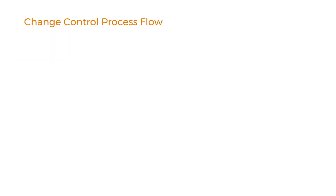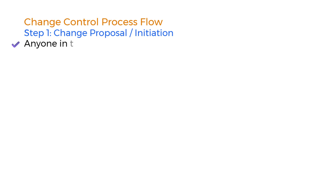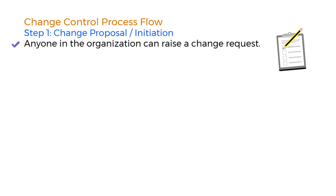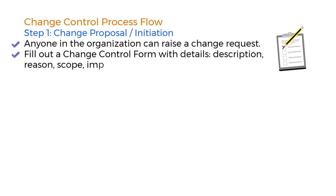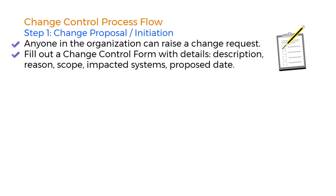Let's go through the typical steps in change control. Step 1: Change Proposal or Initiation. Every change starts with an idea, and in a GMP environment, even small changes must be formalized. Any employee — whether from QA, production, engineering, or IT — can propose a change by filling out a change control form. This form captures a clear description of the proposed change, the reason for the change, the scope of what areas, equipment, or documents are impacted, any affected systems or departments, and the proposed implementation date.